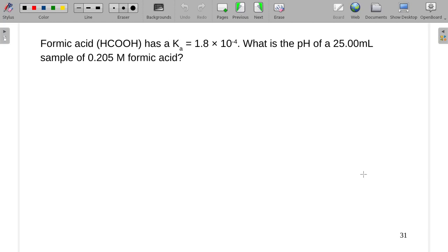Formic acid has a Ka of 1.8 times 10 to the negative fourth. What is the pH of a 25 milliliter sample of 0.205 molar formic acid?